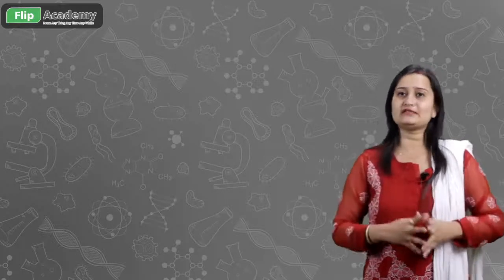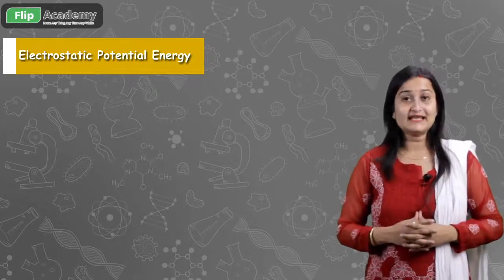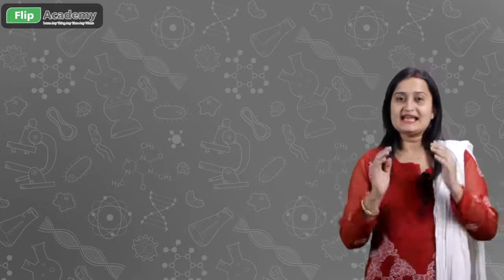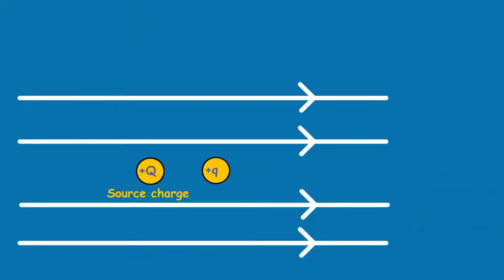If we talk about the electrostatic potential, then the energy associated with the object is called the electrostatic potential energy. Before going further, let us understand this very important term. In the diagram, there is a source charge represented by plus capital Q, placed in a uniform electric field. If you bring a very small test positive charge near to the plus Q charge,